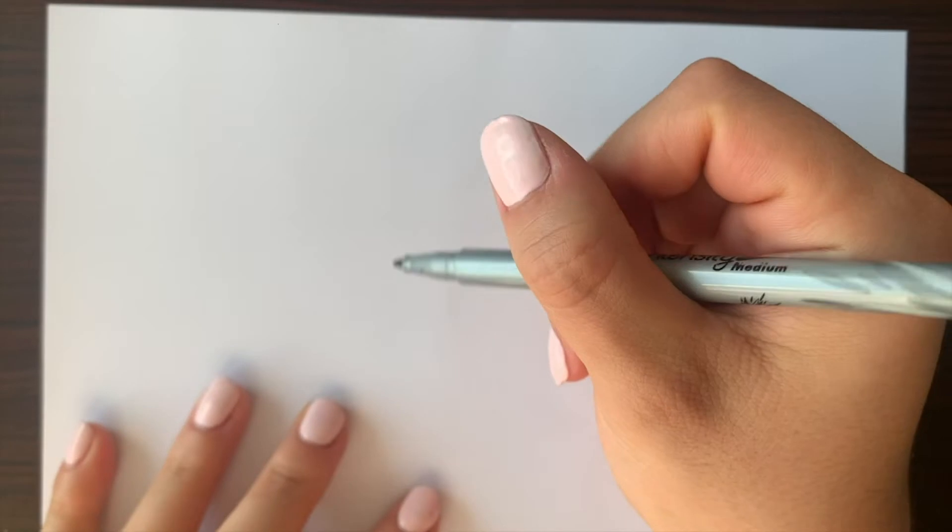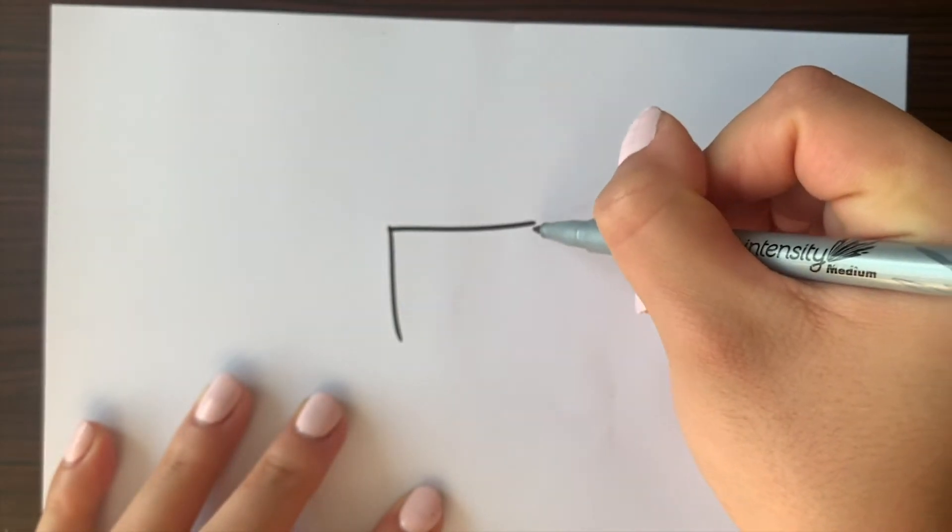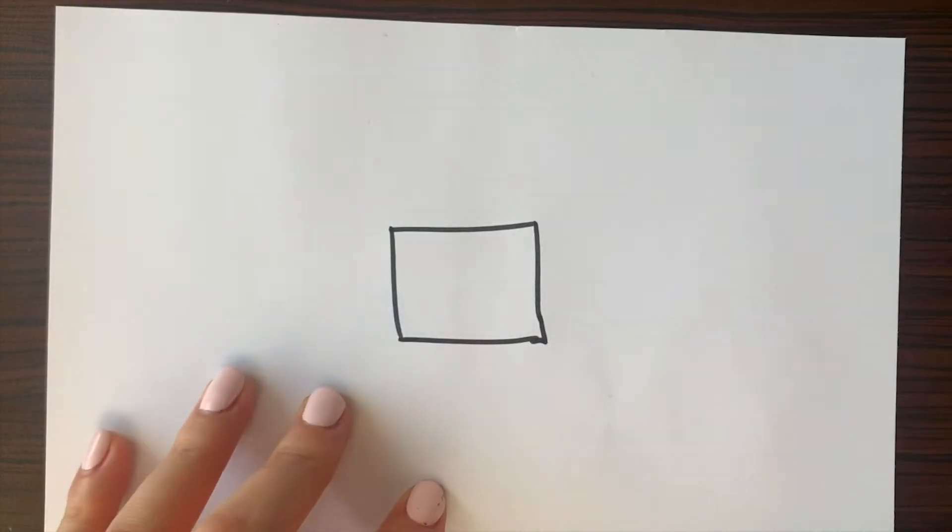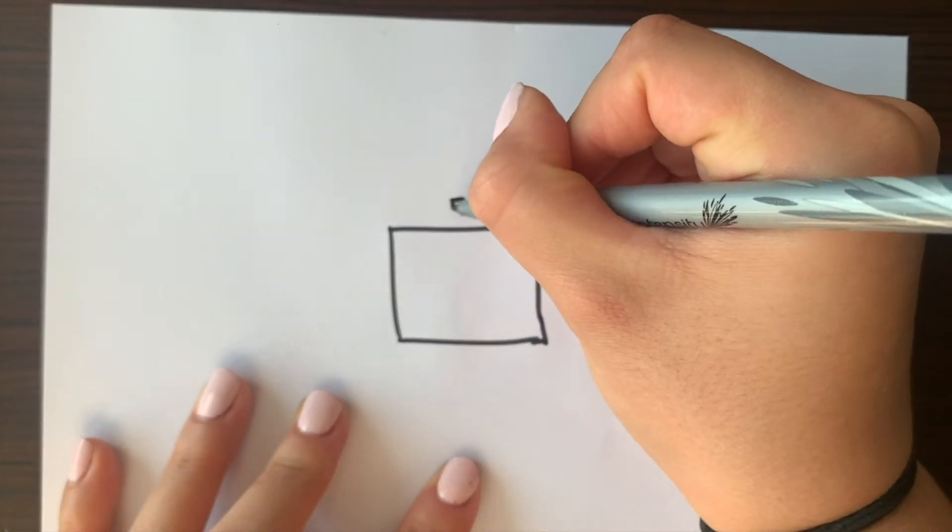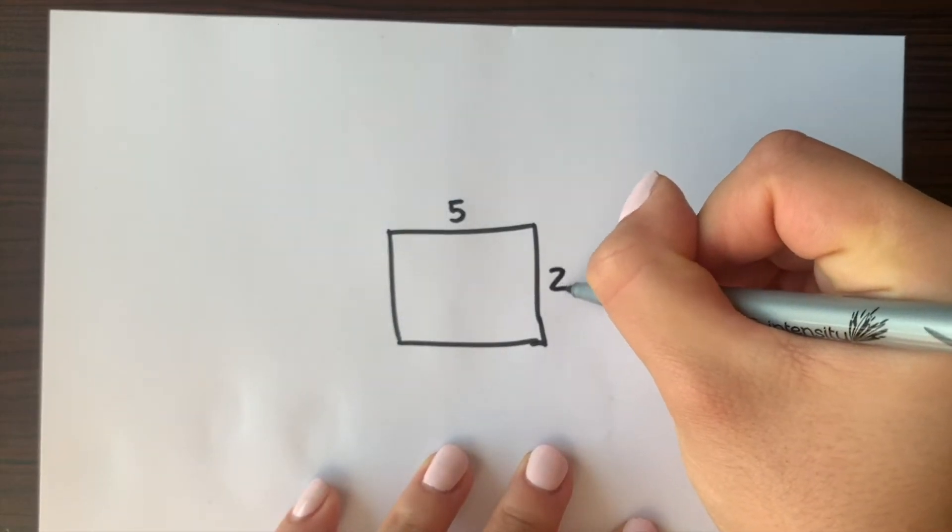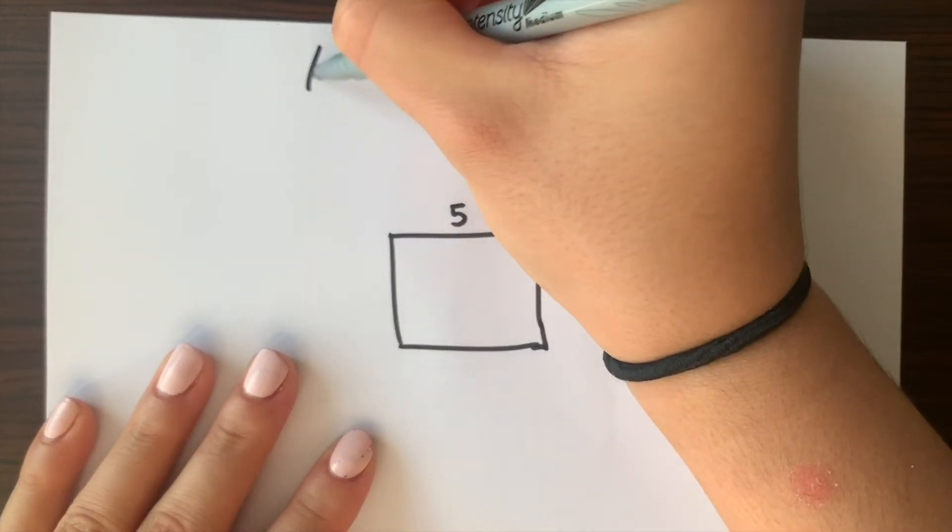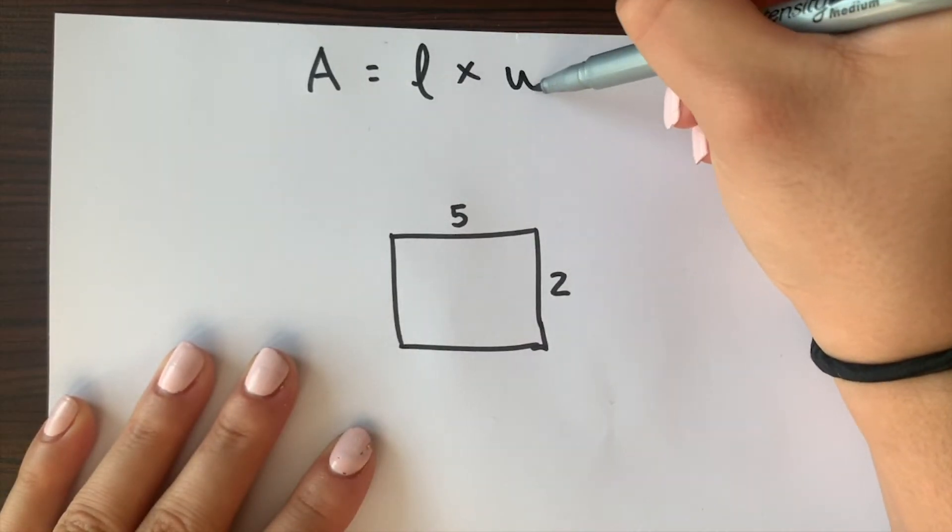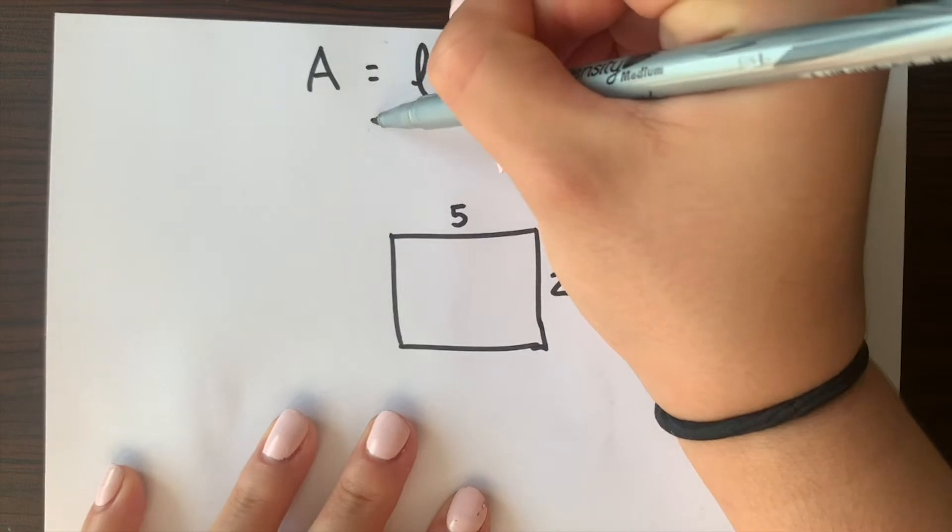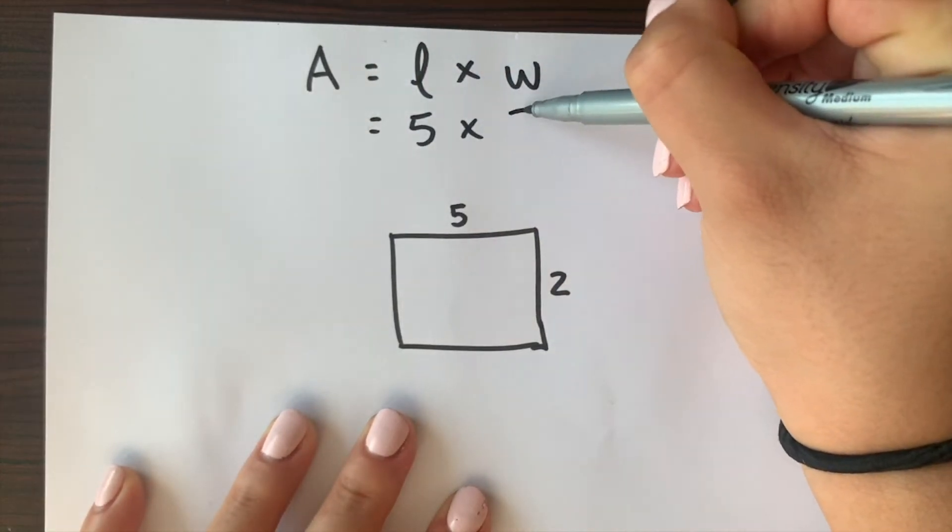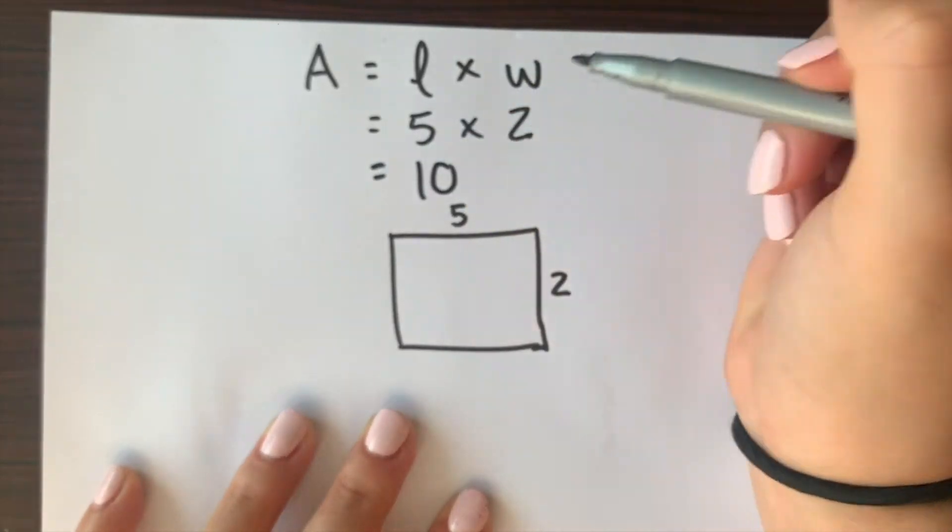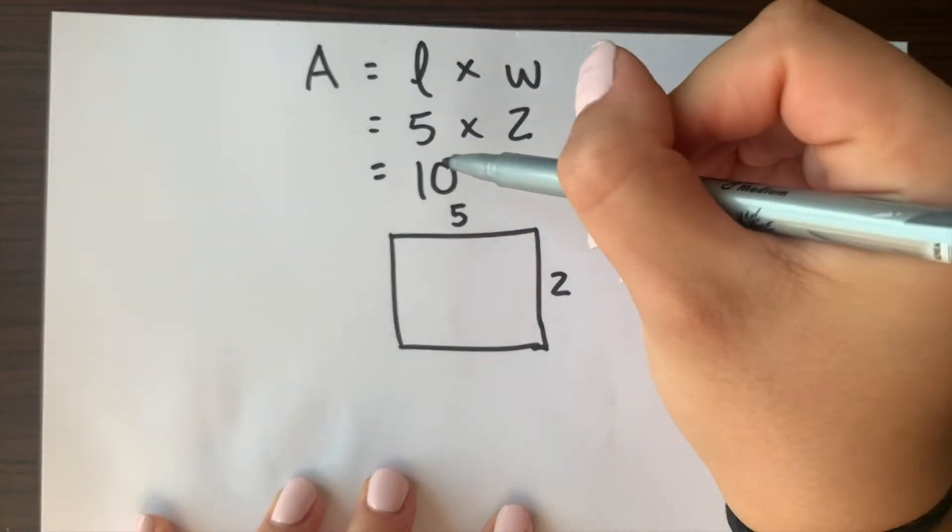So to get started and to demonstrate an example here I'm going to draw a rectangle right here just so that I can use this as my example. So let's say our length is 5 and our width is 2. Remember that the equation for our area is going to be length times width which means that we have to multiply 5 times 2 which gives us 10. So the area of this rectangle equals 10.